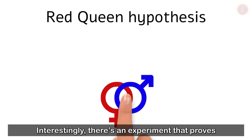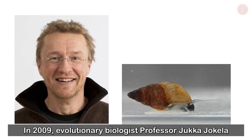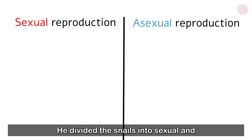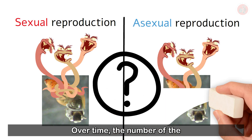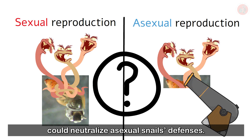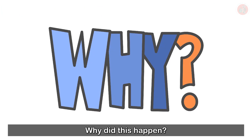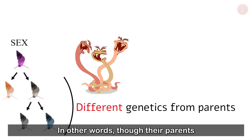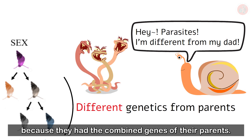There's an experiment that proves the Red Queen hypothesis about the origins of sex. In 2009, evolutionary biologist professor Jokha Jokhela experimented with mud snails that can reproduce both sexually and asexually. He divided the snails into sexual and asexual groups, and then introduced parasites to both groups. Over time, the number of asexual snails declined sharply, because the parasites had developed new offensive weaponry that could neutralize asexual snails' defenses. On the other hand, the number of sexually reproducing snails steadily increased, because offspring born through sexual reproduction have different genetic traits compared to their parents — though their parents may have been helpless against the parasites' new weapons, the offspring could defend themselves because they had the combined genes of their parents.